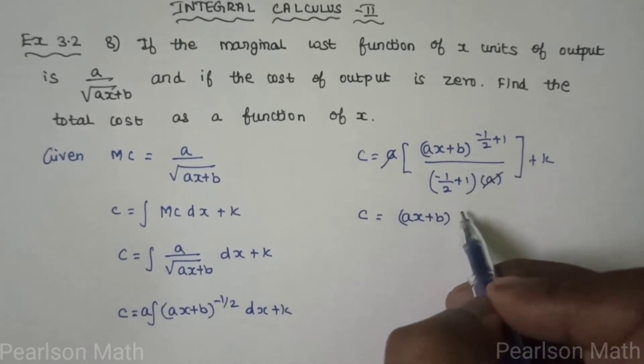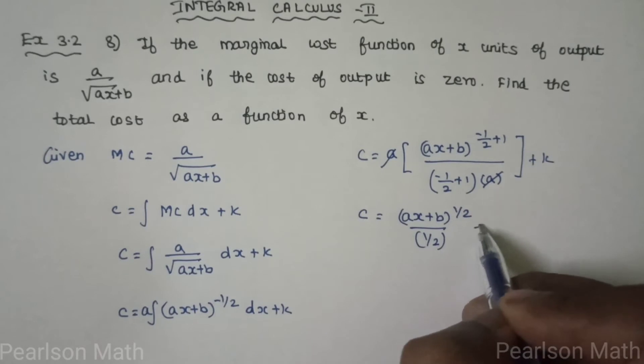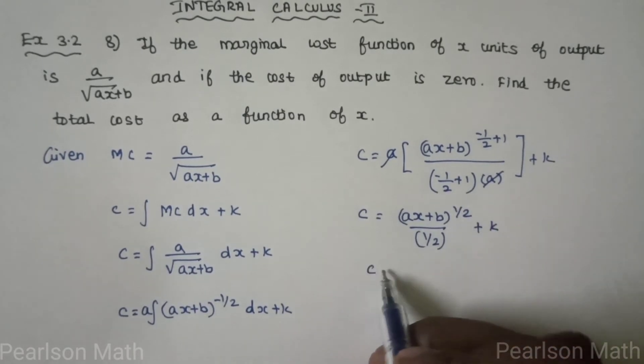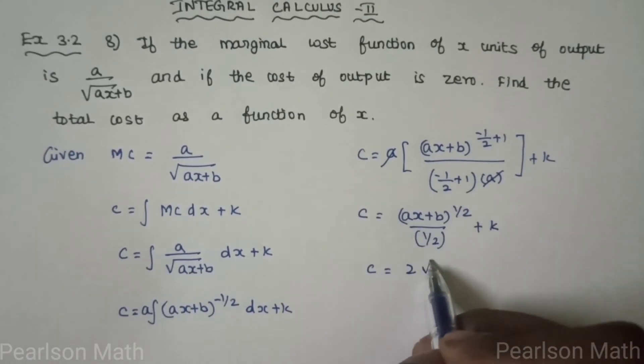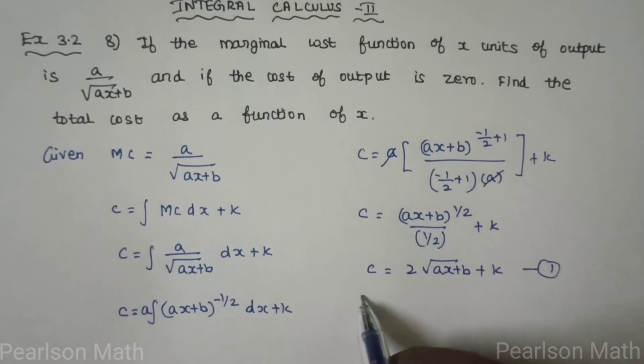Where 1 by 2, so the denominator is 1 by 1 by 2 plus k. Now 1 by 2, we have reciprocal of 2. Reciprocal of a number is 2 times root of ax plus b plus k. This is the first equation.